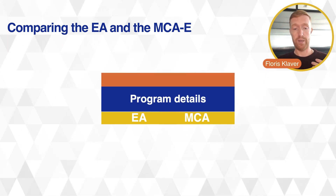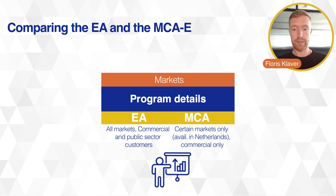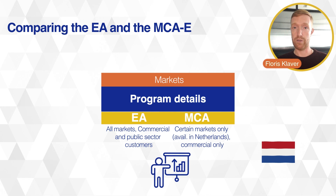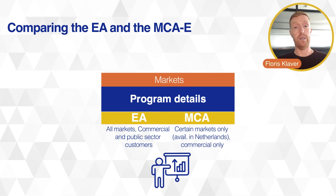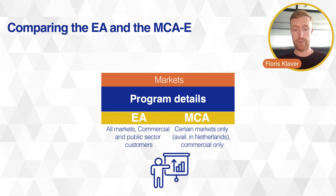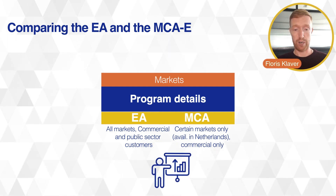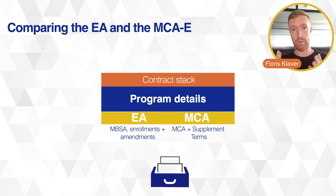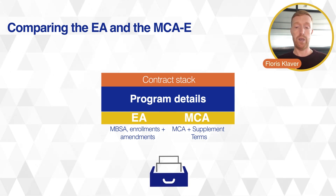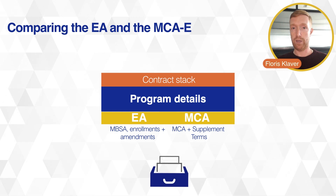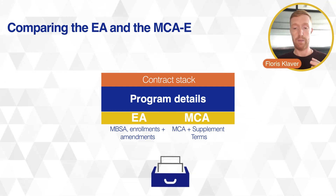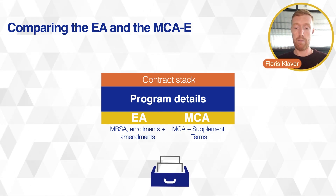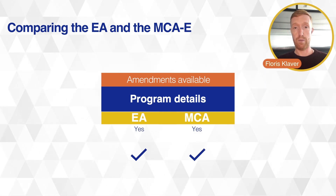Moving into program details: the MCAE is not available in all markets. It is available in certain markets such as the Netherlands, most Western European countries, the US, Canada, and Australia, but in many countries it is not yet available. The Enterprise Agreement is available in all markets for commercial and public sector customers. The contract stack for the EA is still very large — MBSA, agreement, enrollments, amendments, customer price sheet, product selection form — whereas for the MCAE it's just the Microsoft Customer Agreement terms and potentially supplemental terms added when you start buying products.